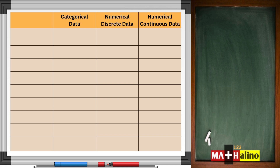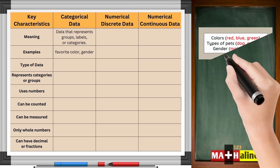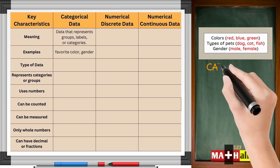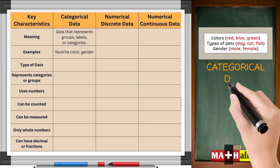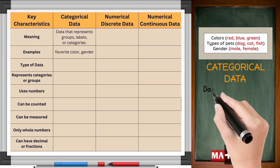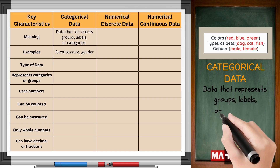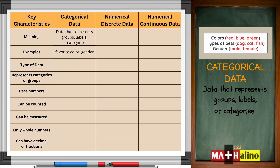Let's compare these three types of data using key characteristics. Let's break it down one by one. Categorical data: data that represents groups, labels, or categories.